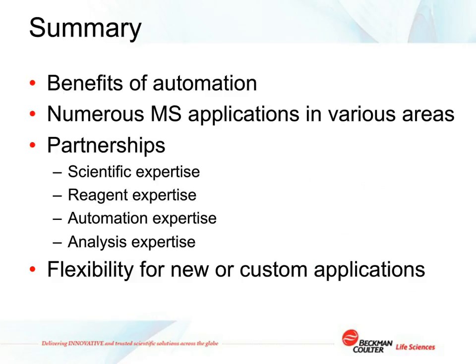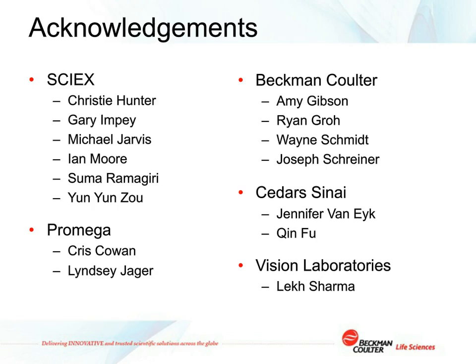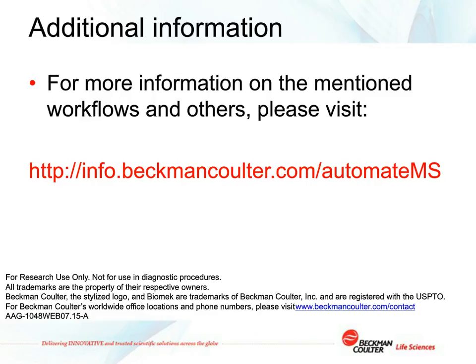To wrap up: I hope I've shown you that there are real benefits to automation, and in particular for mass spec applications. We already have a number of mass spec applications developed for a variety of areas, due in large part to our partnerships where collaborators bring scientific, reagent, and analysis expertise, and we provide the automation component. The four workflows described today may not be exactly what you're currently doing, but the instruments are designed with the flexibility for novel or customized applications to be developed for a given lab. I'd like to thank our collaborators at SciEx, Promega, Cedars-Sinai, and Vision Laboratories, as well as my colleagues at Beckman Coulter. Additional information about reagents, protocols, and LC-MS data is available at the URL in the resource area. Thank you, and I think we're ready for questions.